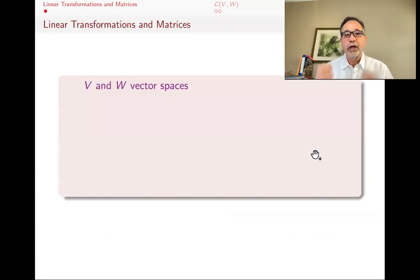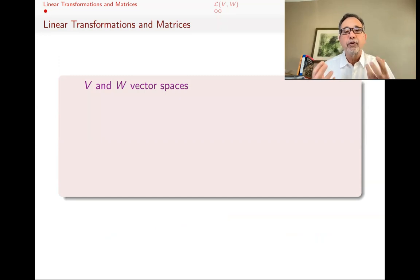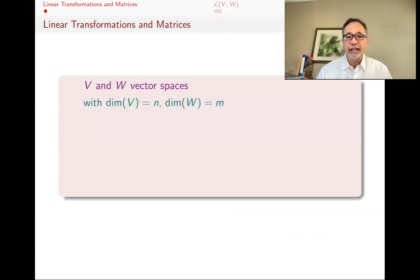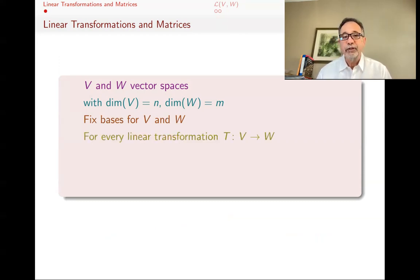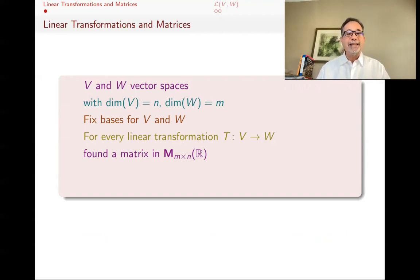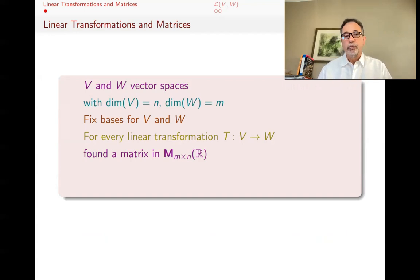Let's start with the relationship between linear transformations and matrices — we've made the point in several previous videos that these are two different versions of the same thing. So if you have two vector spaces V and W that are finite dimensional, with dimension of V equal to N and dimension of W equal to M, and you pick fixed bases for V and W, then for every linear transformation from V to W, you can find an M by N matrix. M is the dimension of the co-domain, N is the dimension of the domain. This works over any field F.